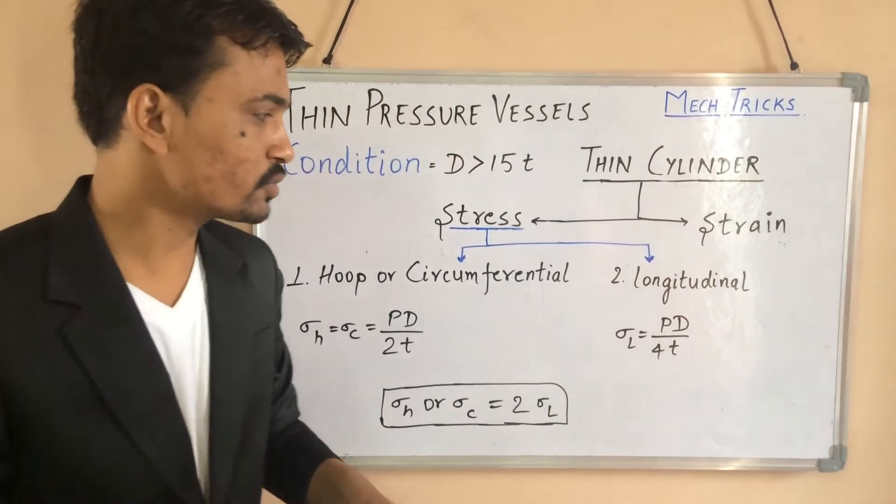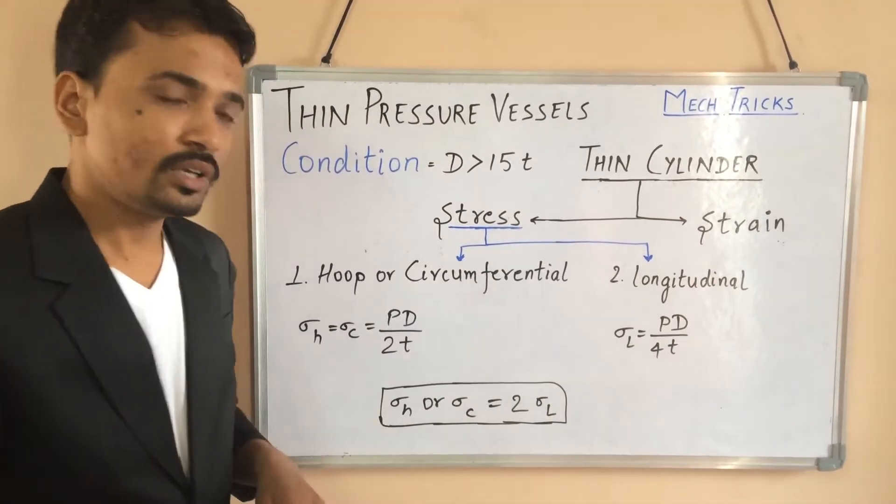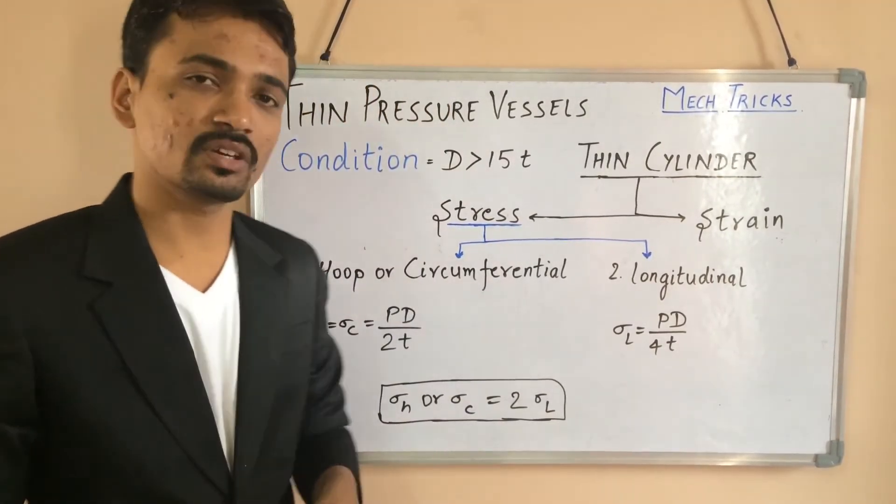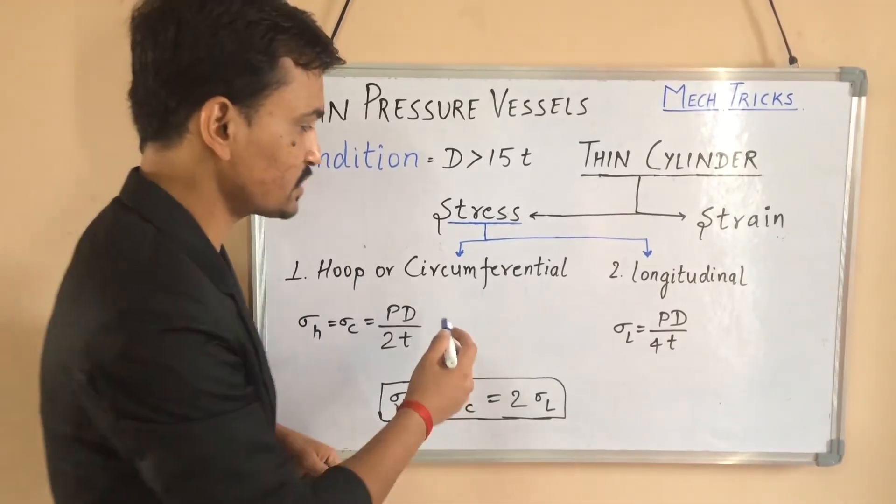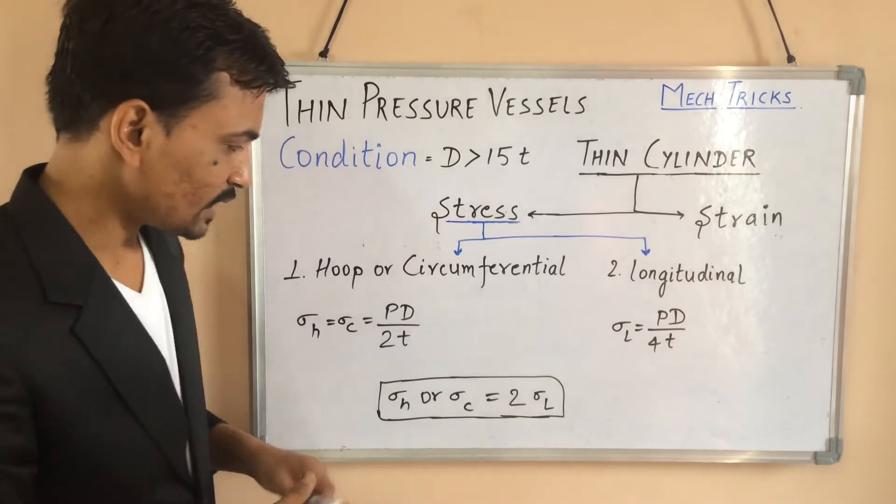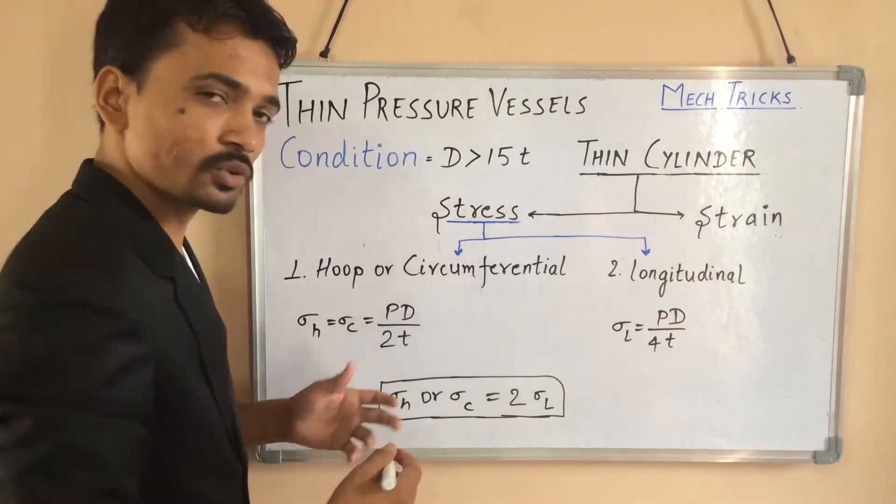And a student may get confused about where they have to use 1 by 2 and 1 by 4. That's why in examination the question is asked about the relationship between these both stresses or the ratio. And that's why I made this trick to make it easy.